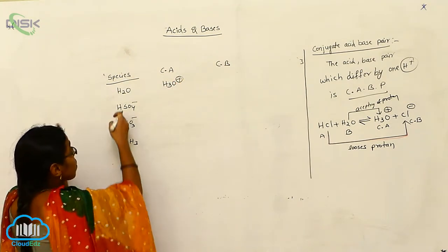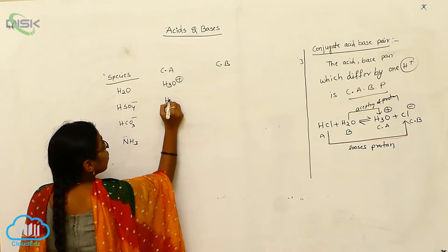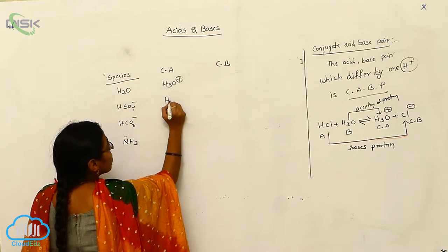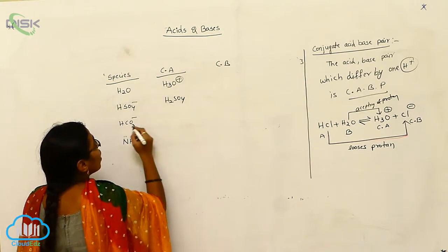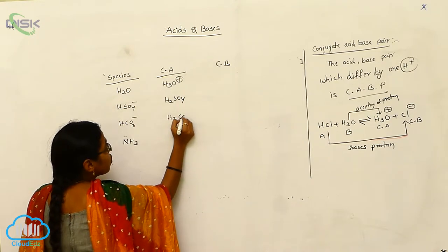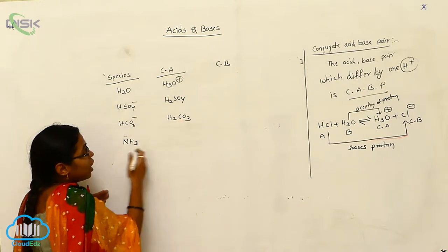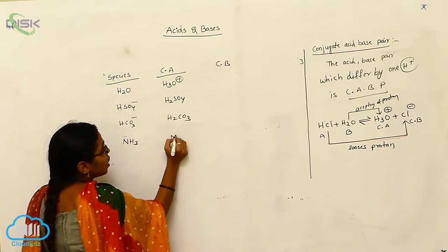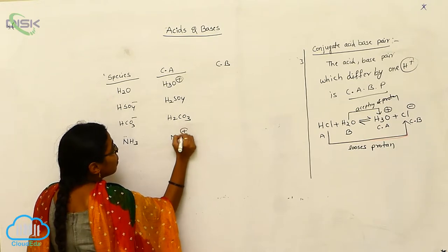For HSO4 minus, accepting of the H plus ion gives H2SO4. And for HCO3 minus you can write H2CO3. And for NH3 you can write NH4 plus.